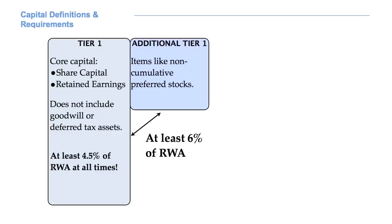Preferred stocks are a special class of shares which have features not possessed by common stocks. Typically, they have preferences in dividends — that is, if dividends are paid, they first have to be paid to preferred stock owners. In non-cumulative preferred stocks, dividends do not accumulate if they are unpaid. Tier 1 and Additional Tier 1 capital must be at least 6% of risk-weighted assets at all times.